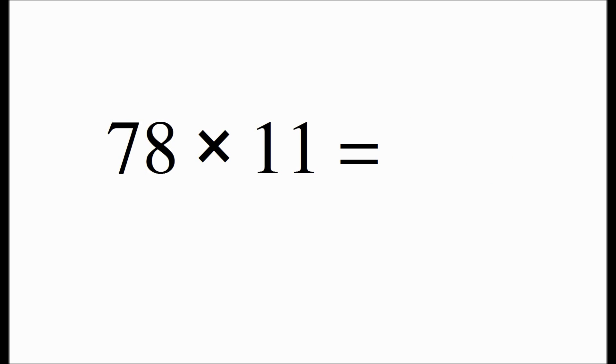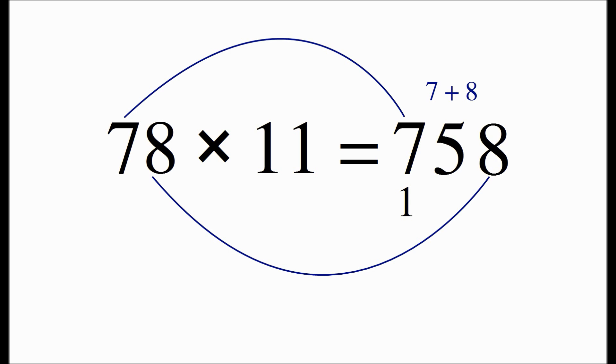For 78 times 11, we copy the first digit of the number to get 7. Then we need to do 7 plus 8. This number is 15, so we need to write it as 1 and 5. We then copy over the last digit of the number 8. Now we need to take care of the 1 by carrying it over to the 7. So we're going to delete the 7 and make it 8. And that's our answer, 858.